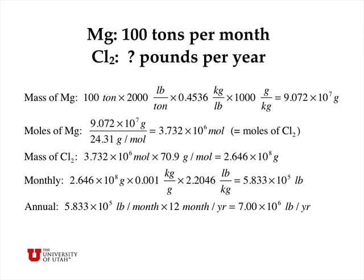The number of moles of magnesium is equal to the number of moles of chlorine gas from the balanced chemical reaction. So we now have the moles of chlorine gas produced per month. The mass of chlorine gas can be obtained by multiplying by the molar mass of chlorine gas. Remember, it's Cl2, so we multiply the molar mass of elemental chlorine by 2. That gives us 2.646 times 10 to the 8th grams per month.